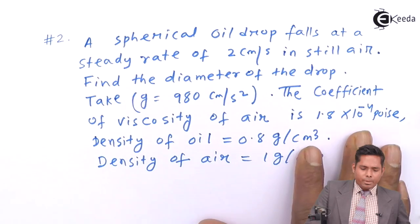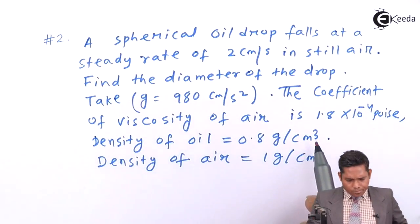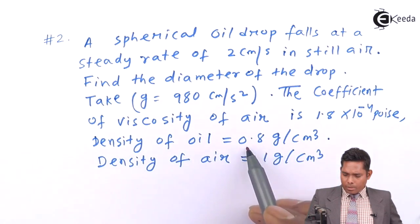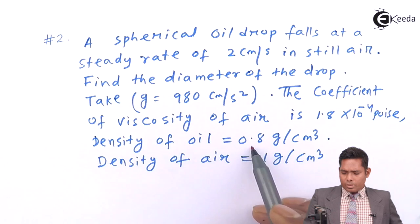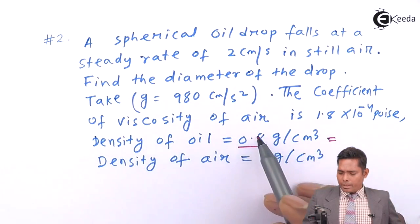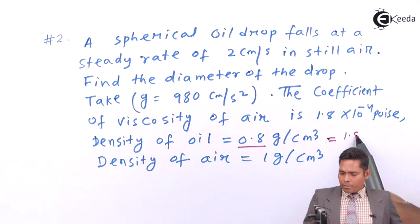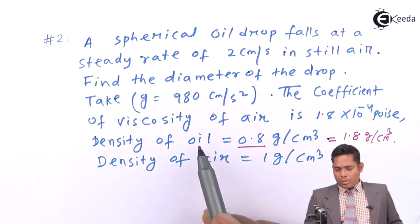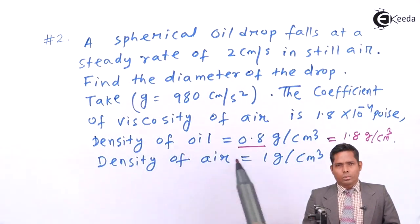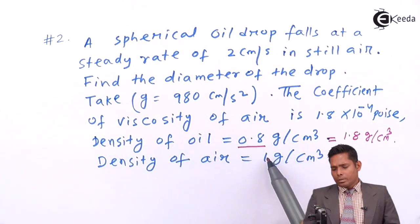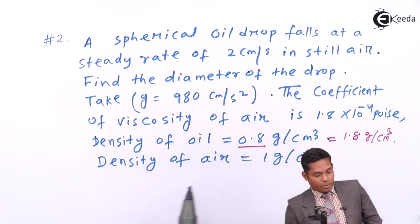Spherical oil drop falls at a steady rate of 2 cm per second in still air. So oil drop is falling down. You need to find the diameter of the drop. The coefficient of viscosity of air is given. Density of oil is given, density of air is given. One correction we have to make because there might be some misprint in the book. If the oil drop is falling down, then its density should be more than the density of the air. So this part is wrong which is given in the book. So I will consider this as 1.8 gram per centimeter cube. This is the correction we will do.